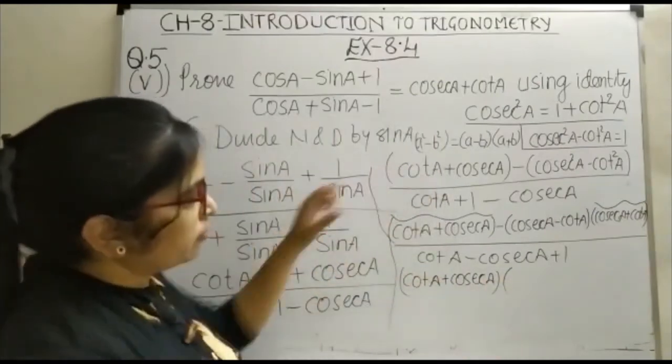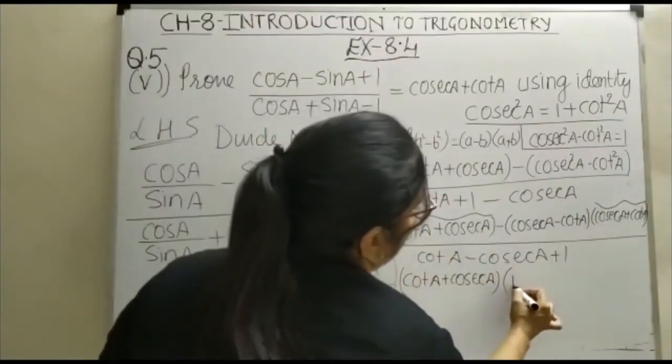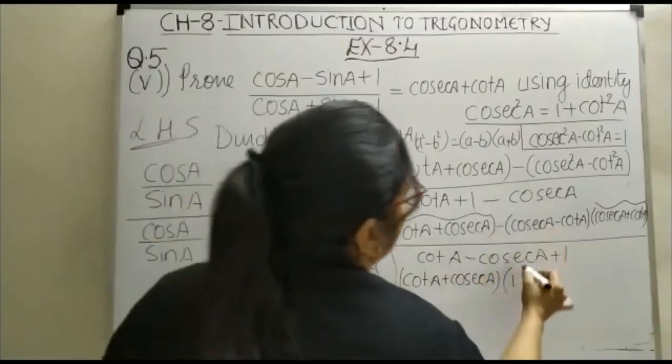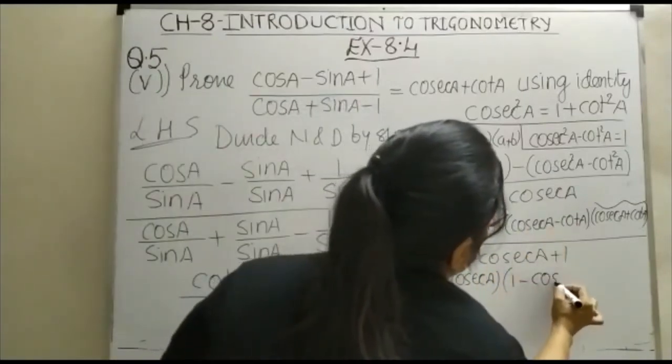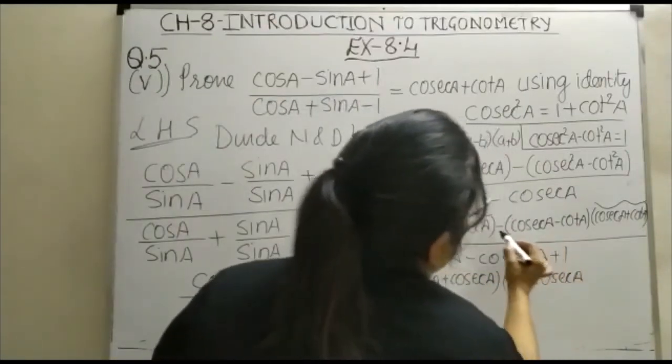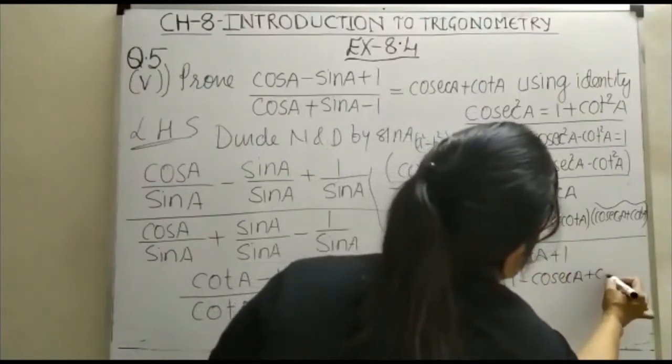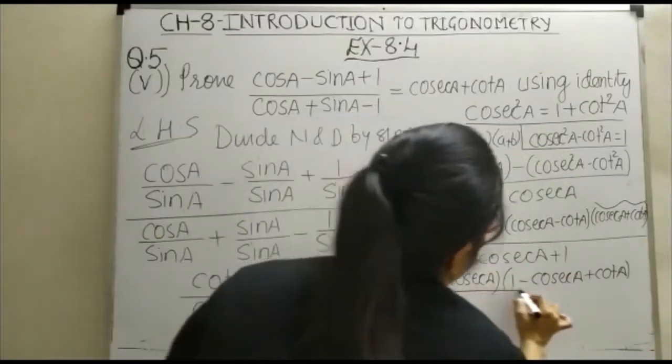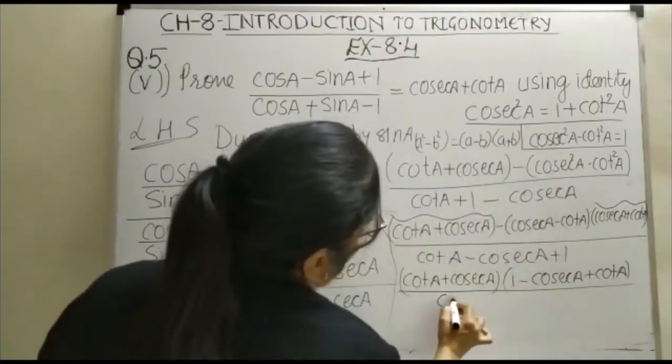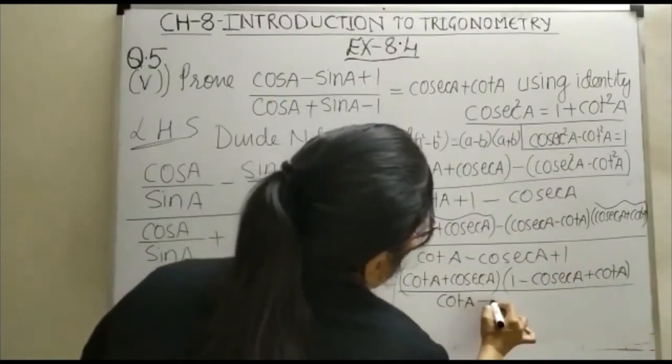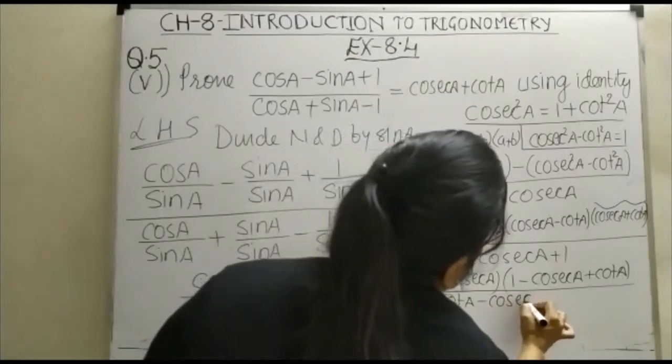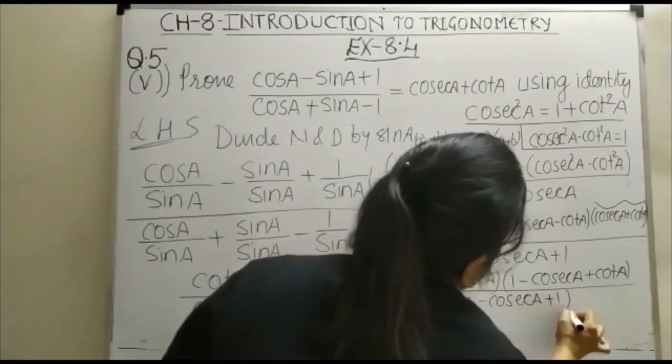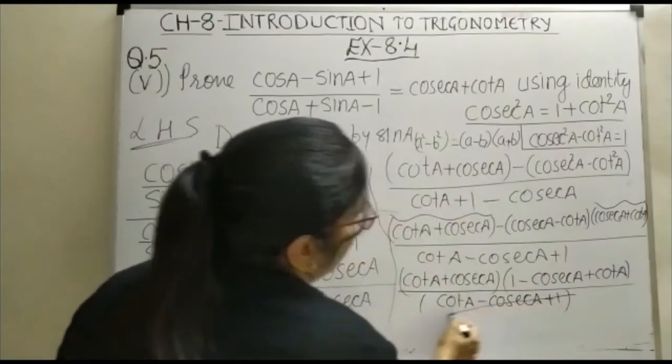Now, just see when I take this term common, here I am left with 1 minus cosec square A minus cosec square A plus 1. You can see that this term get cancelled.